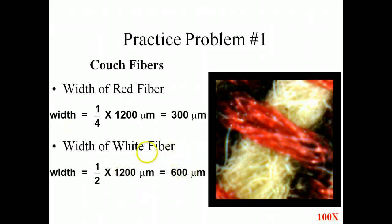Hopefully you paused it and went through and did the math. If you did it correctly, the width of the red would be 300 micrometers if you estimated that this took up about one-fourth of your field of view. And if you estimated that this took up one-half of your field of view, you would have got an answer of 600 micrometers.